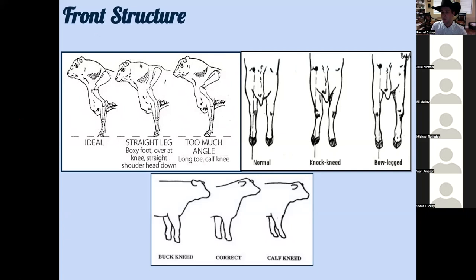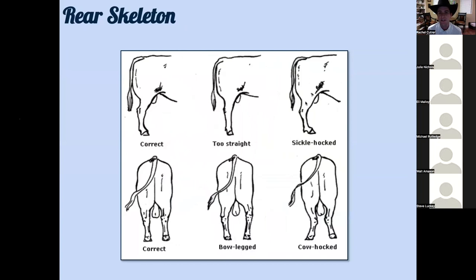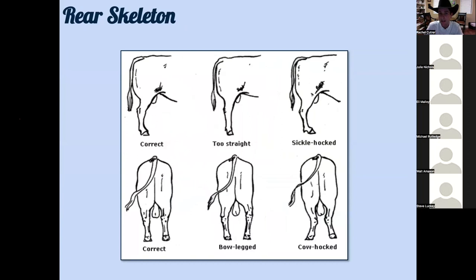Hind leg rear skeleton and its effect on soundness is key, especially in bull selection. Not only do cows need to stay sound over a long production life, but when we turn out a herd bull we must make sure he has the right set to his hock, the right length of hip, and the right shaped foot. When he goes to mount and service a cow, a straighter hock and shorter hip greatly increases the risk of injury. A large number of straight-legged bulls stifle themselves and don't even make it through one breeding season.